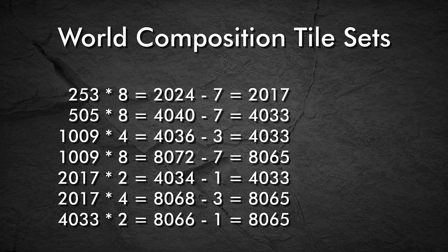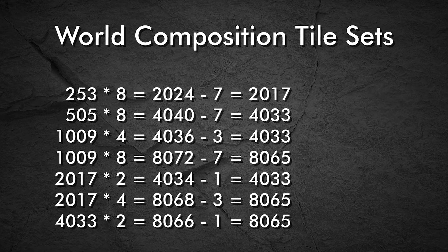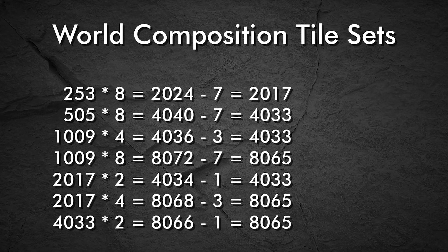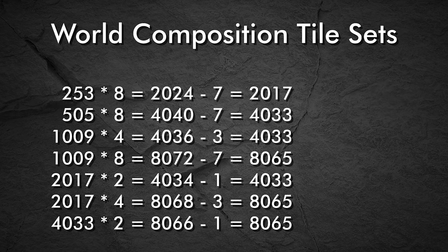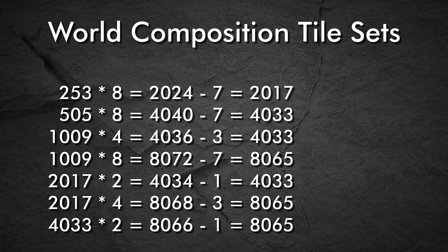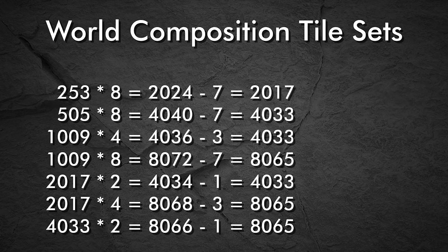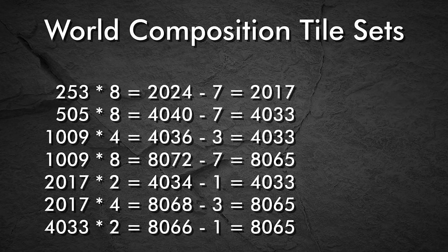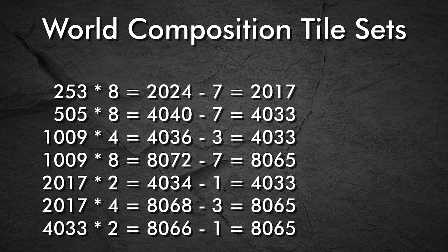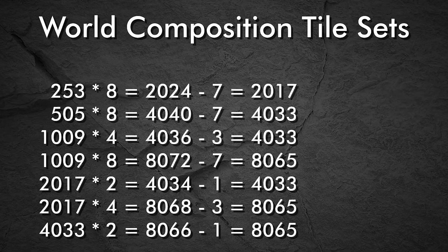We can see by these values that we can easily change a 4033 landscape height map into a 505x8 tileset, a 1009x4 tileset, or a 2017x2 tileset. To convert an 8129 height map into a 2x2, 4x4, or 8x8 set, will require cropping or resampling the 8129 height map to the size of 8065 before tiling.